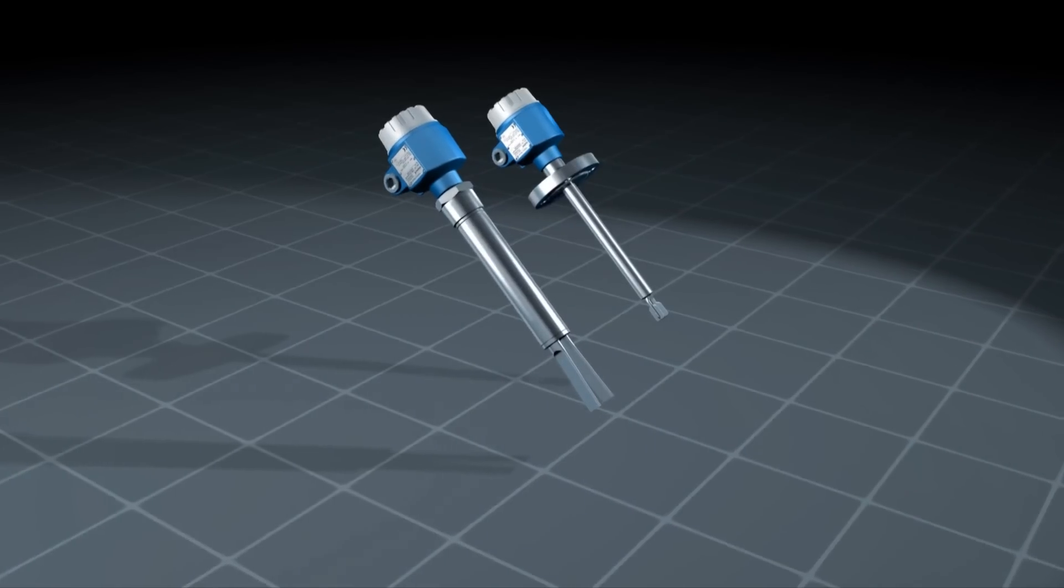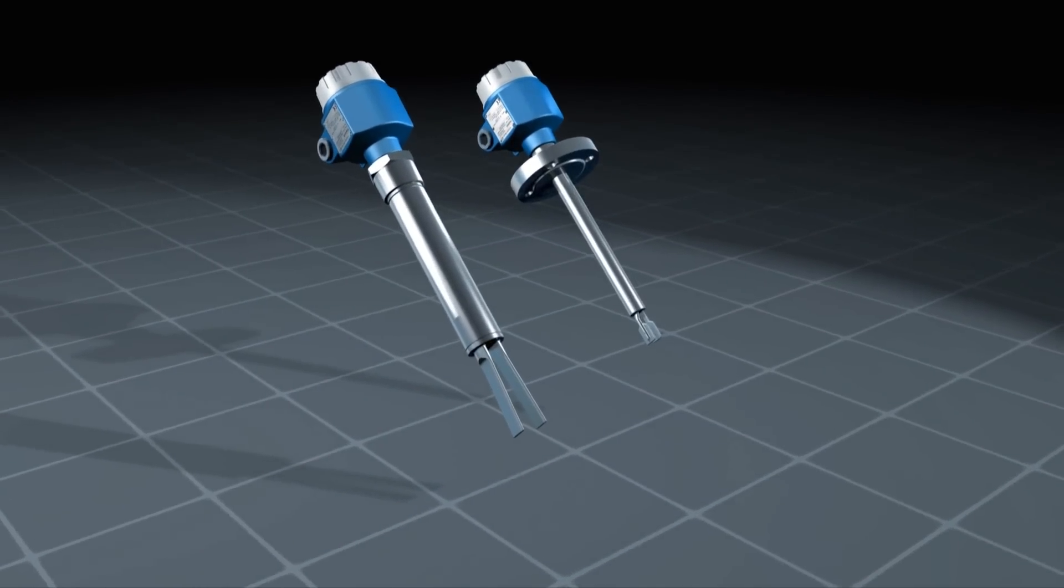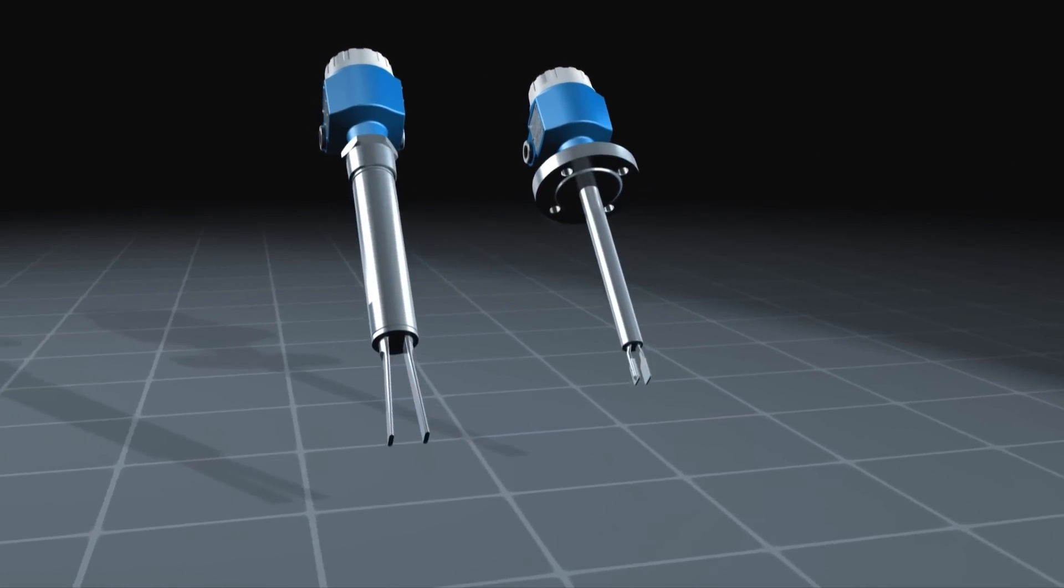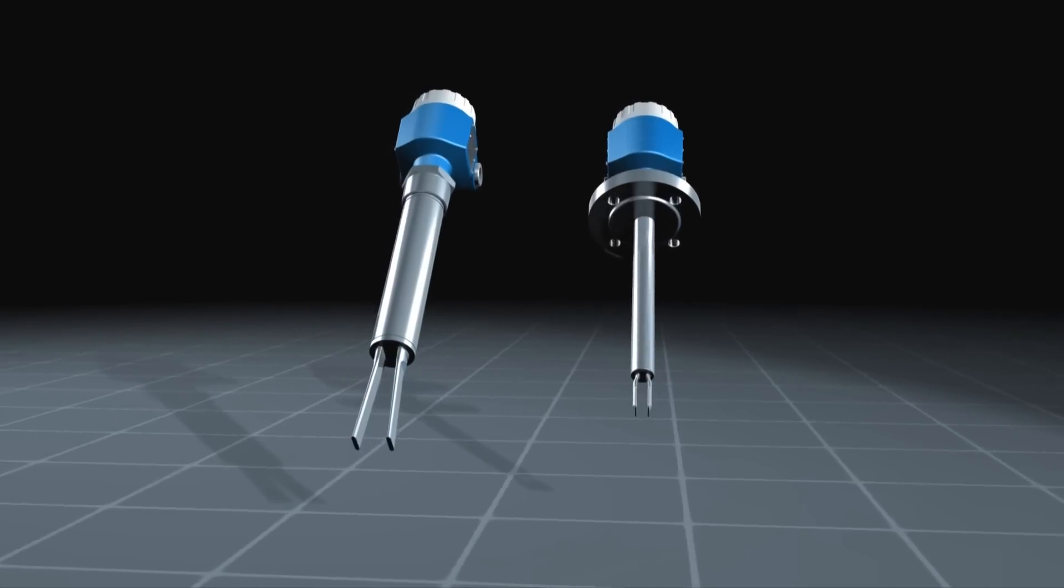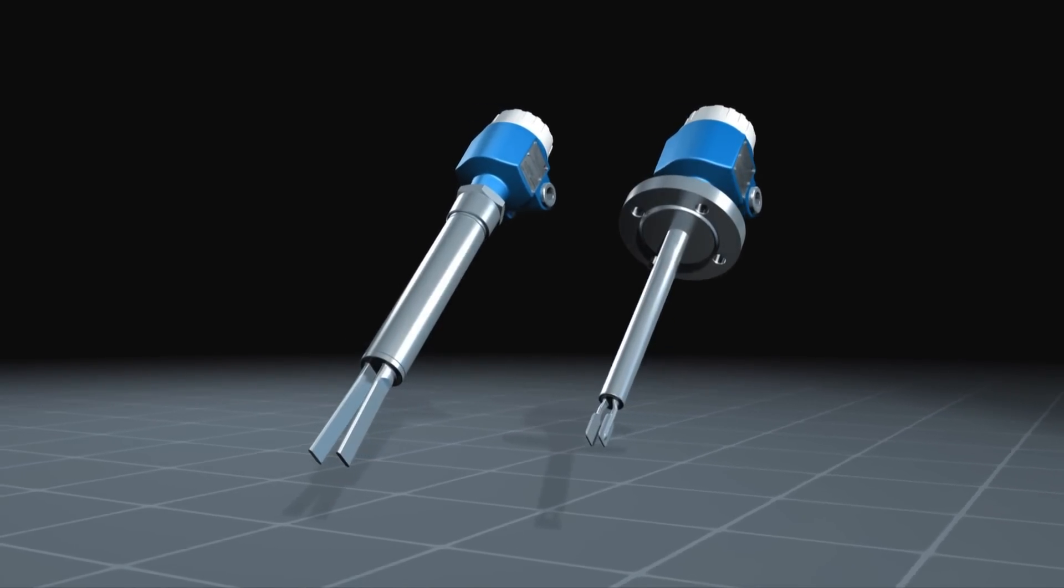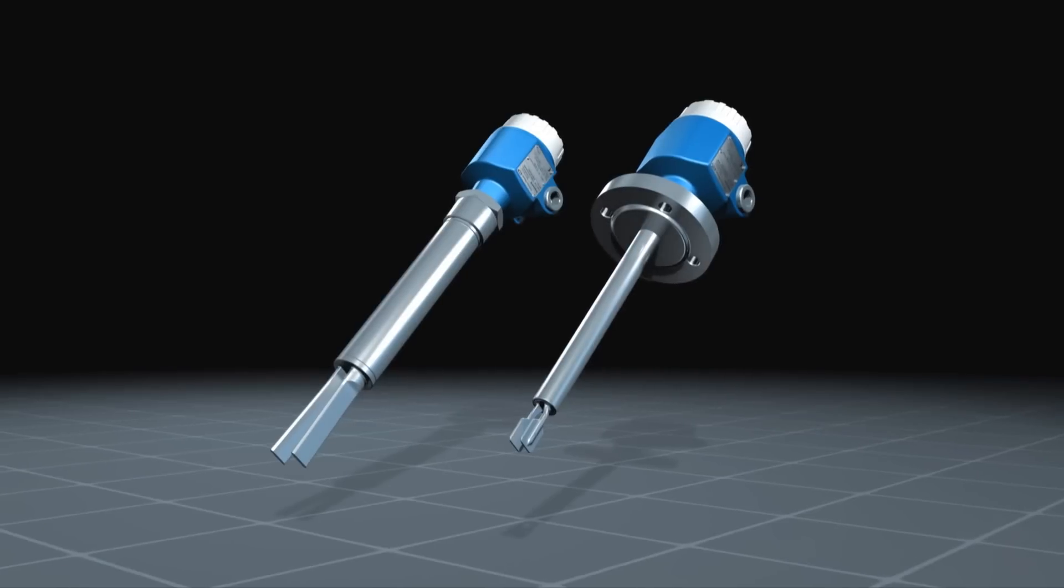The vibronic measuring principle of Endress+Hauser enables point level detection unaffected by the physical properties of the medium. For example, conductivity, dielectric constant, density changes, pressure, or temperature. Turbulences, the formation of foam, or bubbling liquids do not impair the point level detection either.